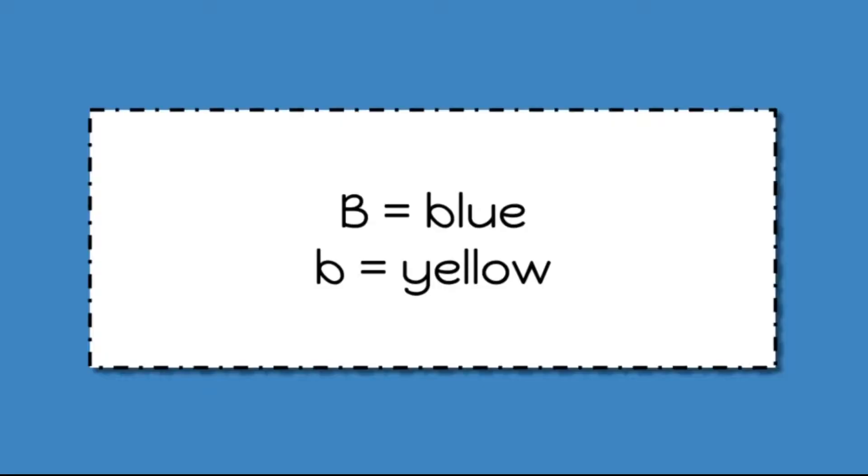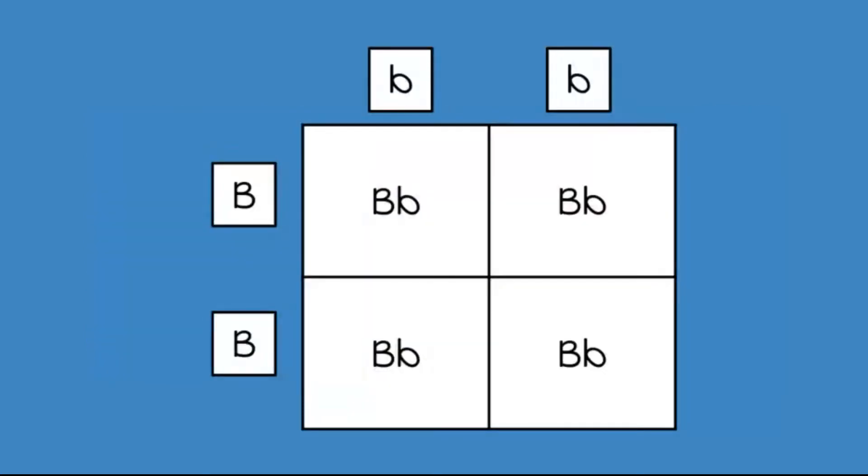Looking at that video example, in our Punnett square, we would have big B equal blue coloring and little b equal yellow. If you have a blue parent, that would be big B, big B. And the yellow parent would be little b, little b.